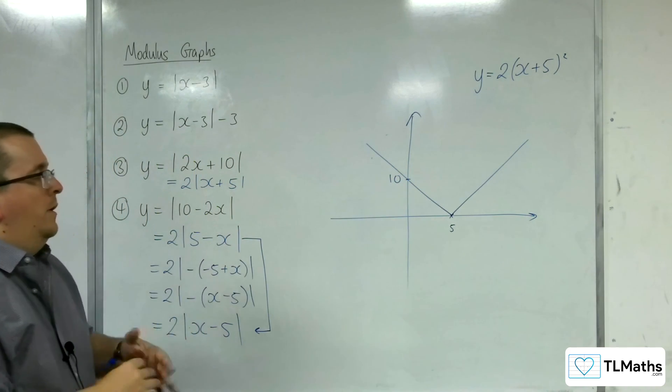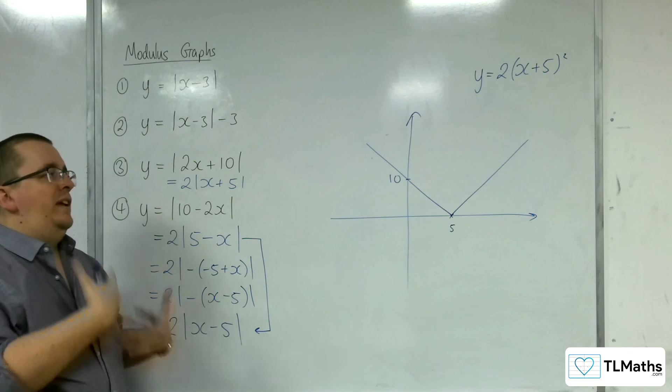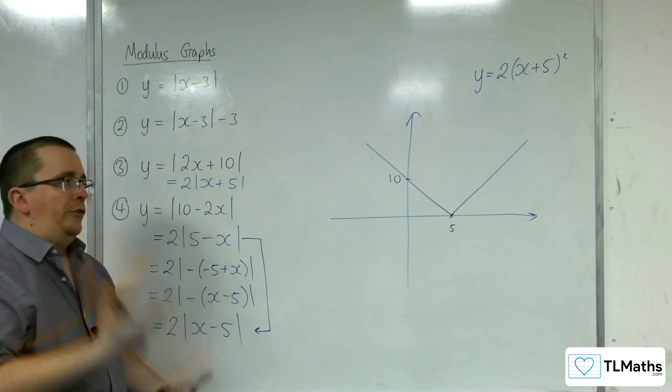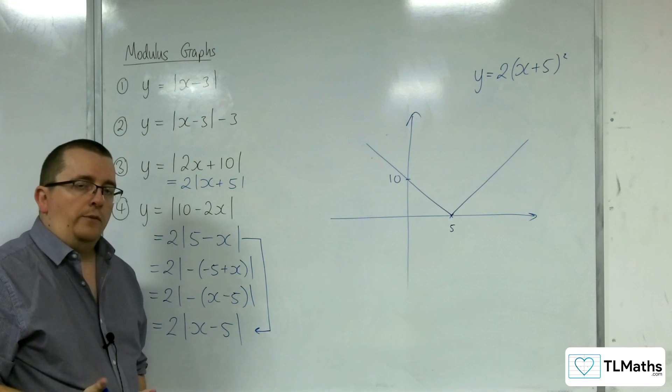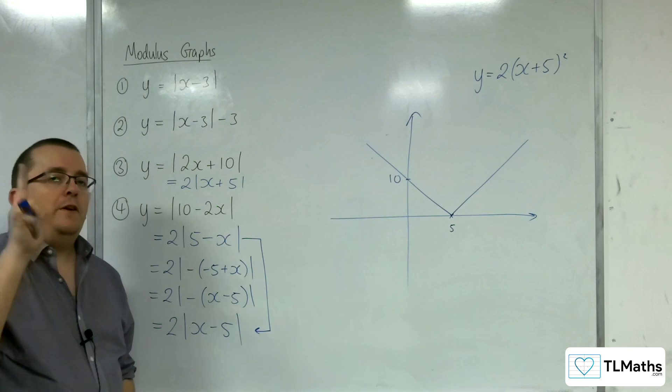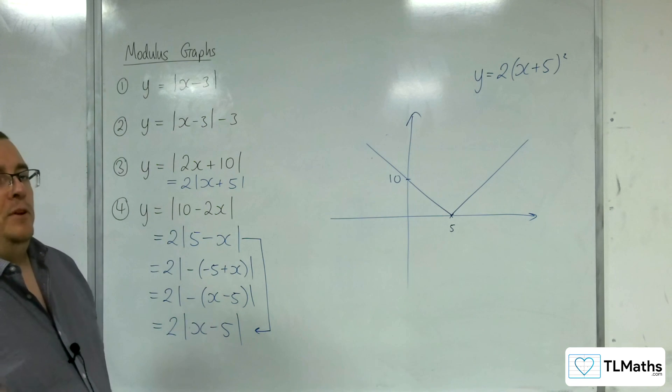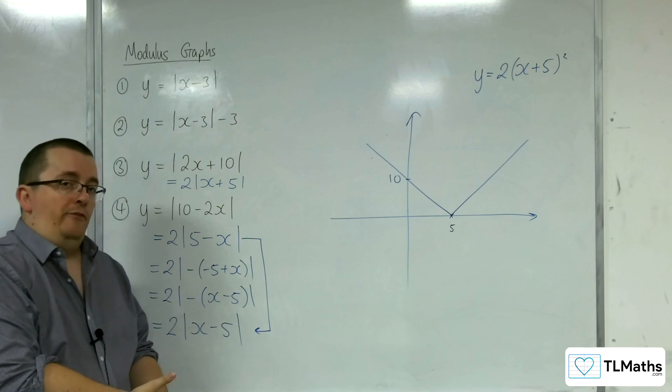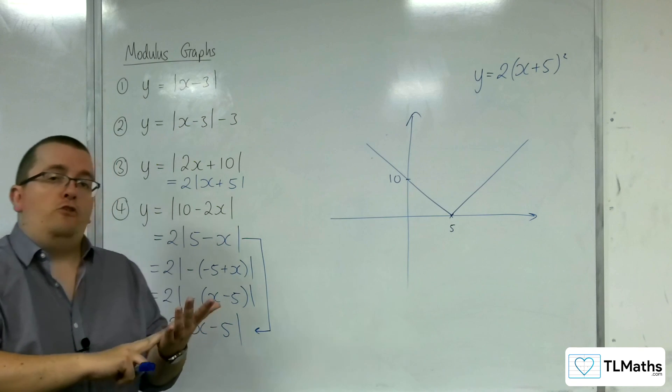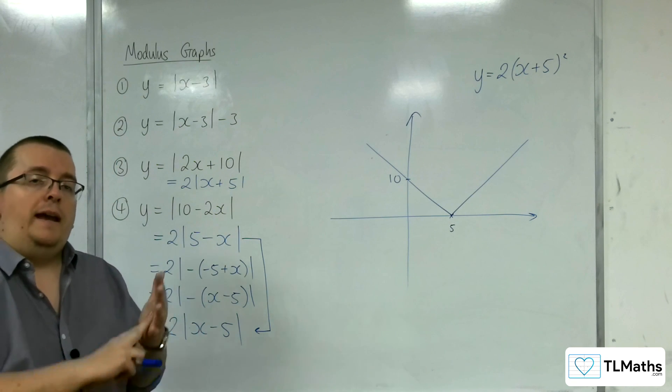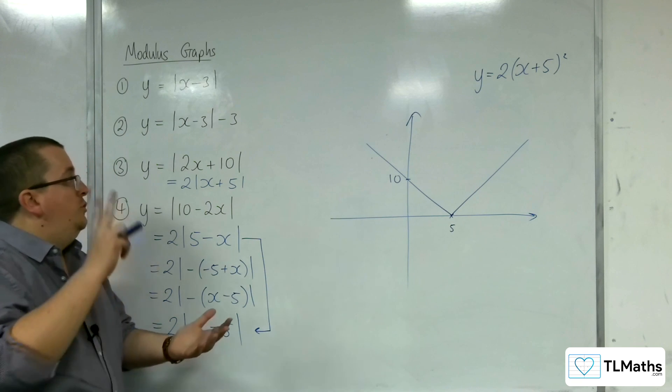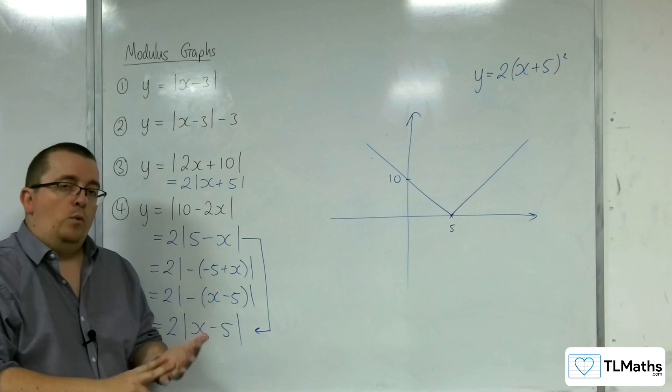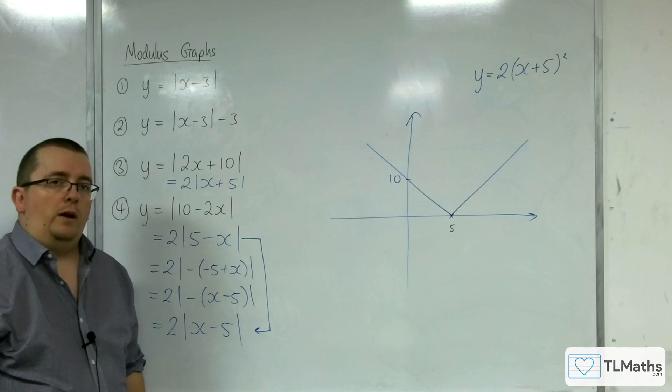And so, this is how easy it can become to sketch the modulus of linear graphs, once you've identified that there is this distinct connection between them and completed square form. If you can read off the vertex from a quadratic in completed square form, you can do so just as easily with the modulus of a linear graph as well.